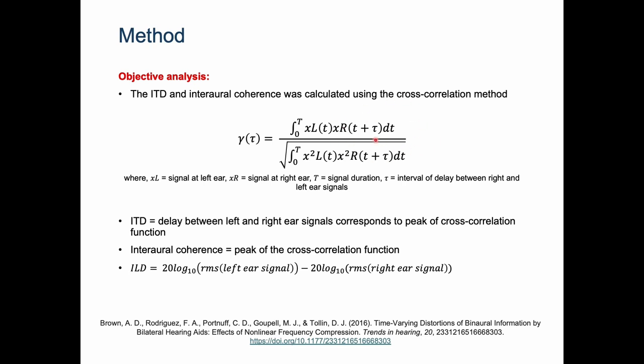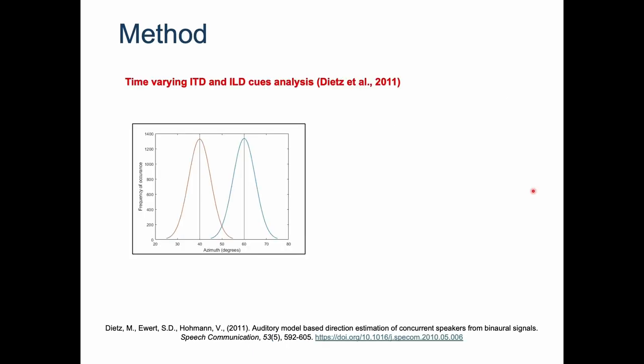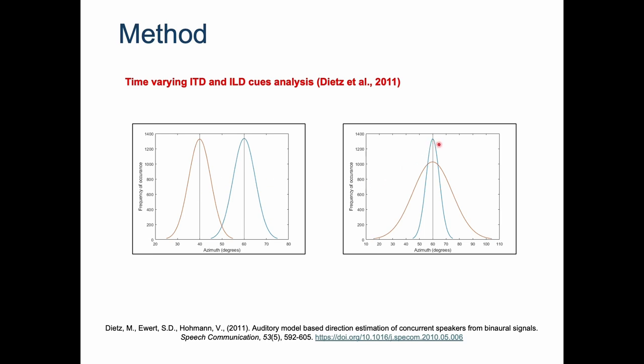The ITD and interaural coherence were calculated using cross-correlation method. ILD is the intensity difference between left ear signal and right ear signal. To evaluate the ongoing ITD and ILD changes within the stimulus, the auditory model developed by Dietz was used. Here the sound direction estimation was calculated using predetermined ITD and ILD maps for different azimuths. This is an example of model output: the peak of the data corresponds to direction of arrival, in this case 60 degrees and 40 degrees. The narrow width indicates high confidence in the direction of arrival and broad data indicates less confidence.